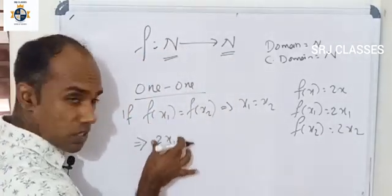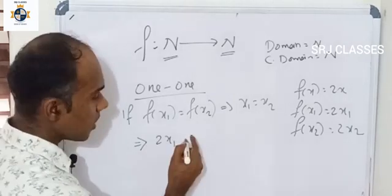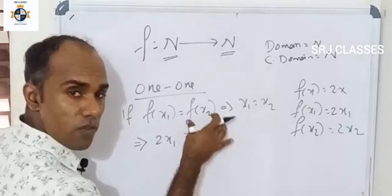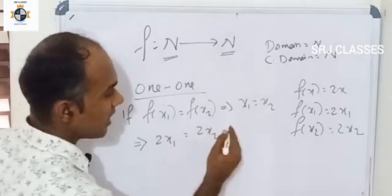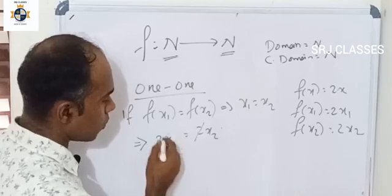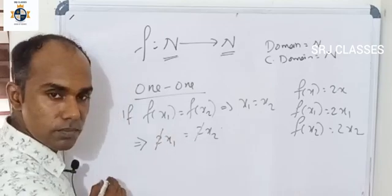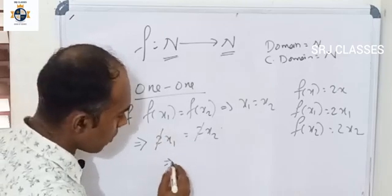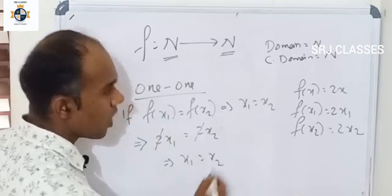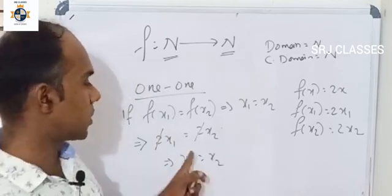For example, f(x1) = 2x1 and f(x2) = 2x2. If f(x1) = f(x2), then 2x1 = 2x2, cancel 2 on both sides. Therefore, x1 = x2.